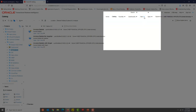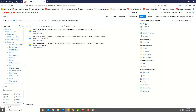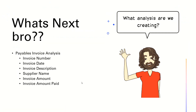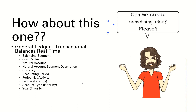Once you're on the BI Catalog page, click on New and then select Analysis. This will open a new window and you can select the subject area from the list. We have used the Payable subject area in our last three videos, so let's try a new subject area in this one. We're going to work with the General Ledger subject area for this analysis.